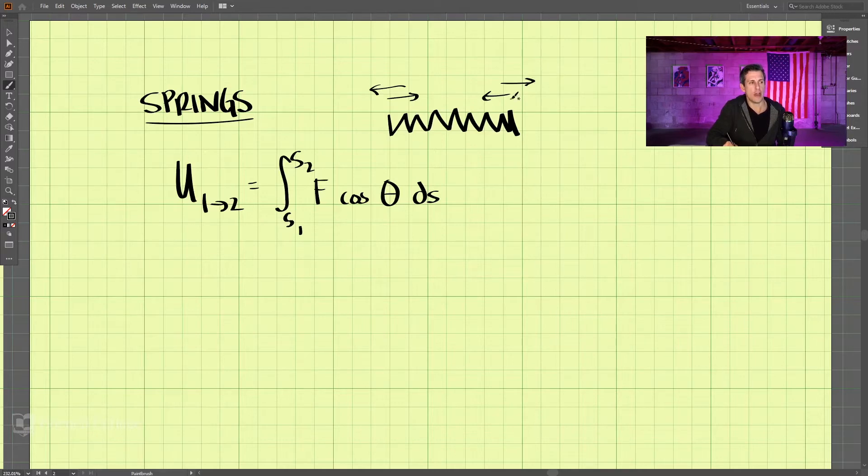Likewise, we know that if we're trying to compress the spring inward here, the force is directed outward. So the force is directed outward if the displacement is inward. We know the angle between the force and the displacement is 180 degrees. So this term, cosine of 180 degrees, comes out to be negative 1.